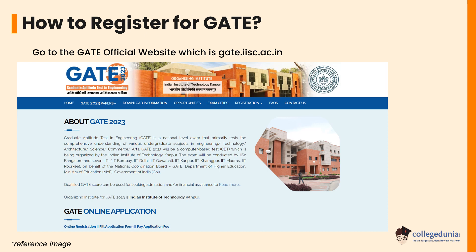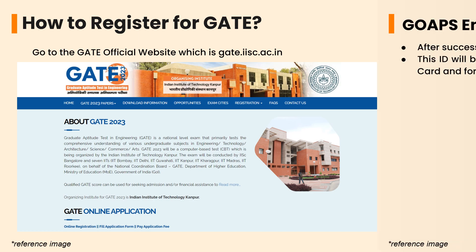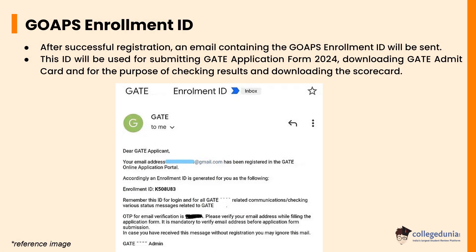If all the details are correct, an SMS and an email will be sent to your mobile number and email address respectively. After successful registration, an email containing the GOAPS enrollment ID will be sent. This ID will be used for submitting the GATE application form 2024, downloading the GATE admit card, and for the purpose of checking results and downloading the score card.